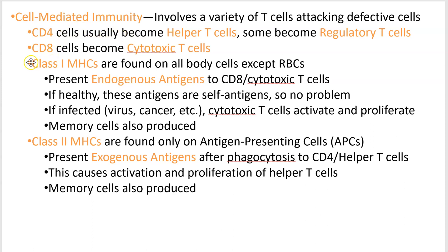Class 1 MHCs are the ones found on almost all your cells. If you have a liver cell with a virus inside it and it wants to show that it's infected, it grabs a little piece of that virus from inside and exposes it via class 1 MHCs. These antigens found inside your cell are endogenous — so these are infected cells.